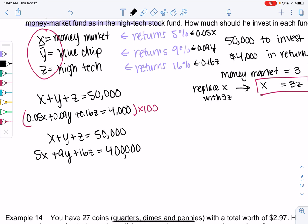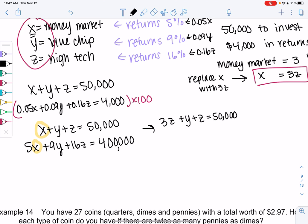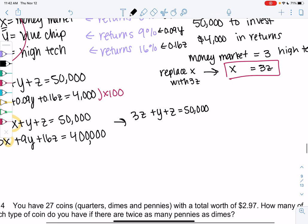Rather than trying to do the triangular method, I think it's easier to only have two variables if that's an option. So I am going to replace X with 3Z. So we get 3Z plus Y plus Z equals 50,000, or that tells me that we get Y plus 4Z is 50,000.